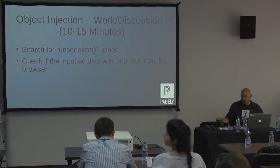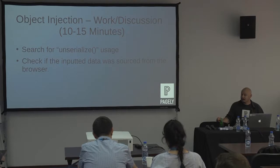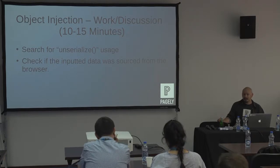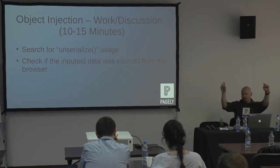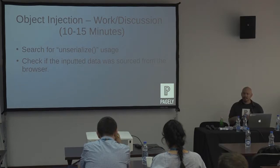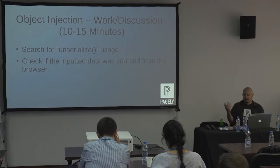A proof of concept can be as simple as a URL. If there's a GET request, most of the time they're cookie data or POST data. In those cases I use curl or wget. If you're familiar with those programs, those are the super elite hacker tools.